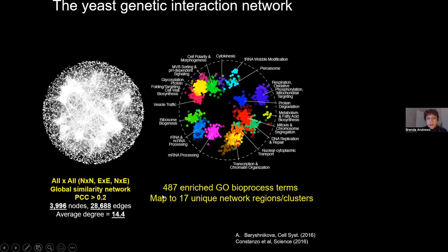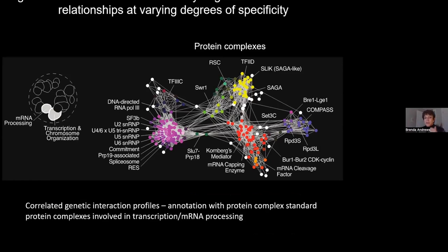Each of these bioprocess clusters corresponds to a major known bioprocess within the eukaryotic cell. At this level of functional profile similarity, we can reveal ribosome biogenesis, RNA processing, chromatin/transcription, nuclear-cytoplasmic transport, and others. If we demand greater profile similarity, we start to see protein complexes emerging on the network. Zooming into the sub-region corresponding to transcription, chromosome organization, and mRNA processing, we can see well-characterized protein complexes such as the Mediator, various chromatin remodelers, the TFIID complex, and mRNA cleavage factors.